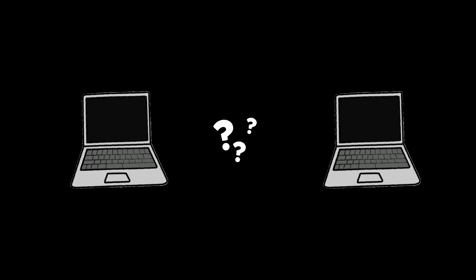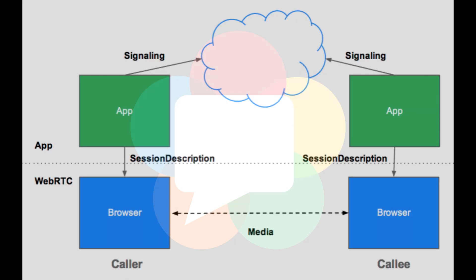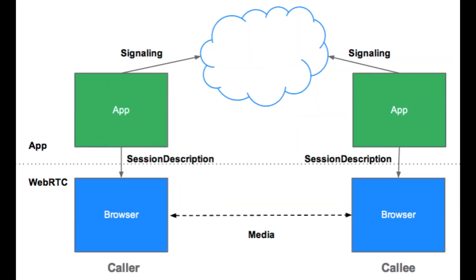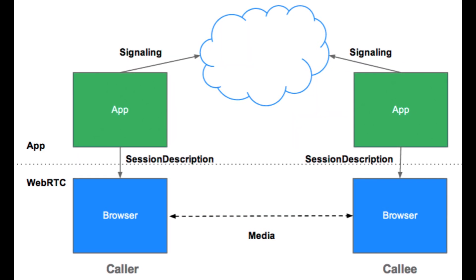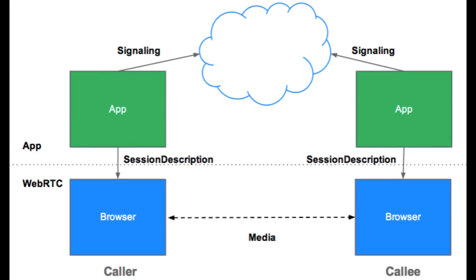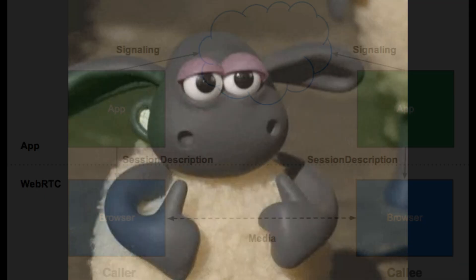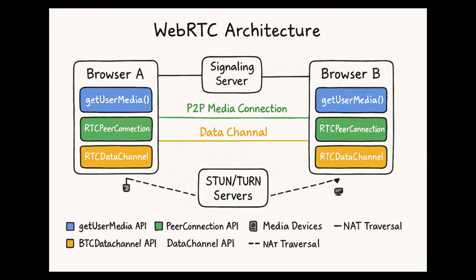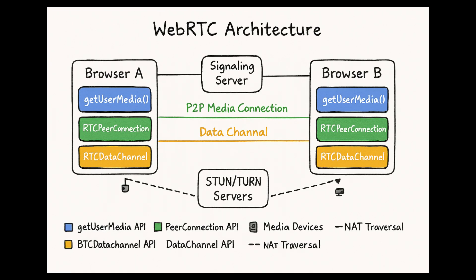But two browsers don't just magically know how to connect. WebRDC first uses something called signaling — a process where the browsers exchange a bit of info about where they are on the Internet and what they can handle. Once that's done, WebRDC tries to make a direct peer-to-peer connection.